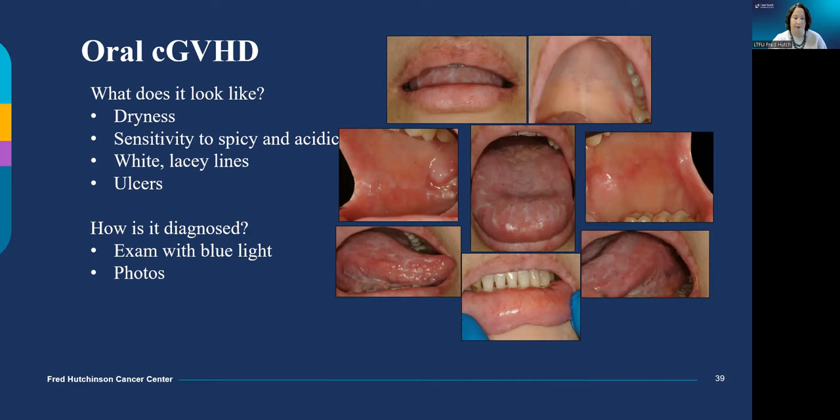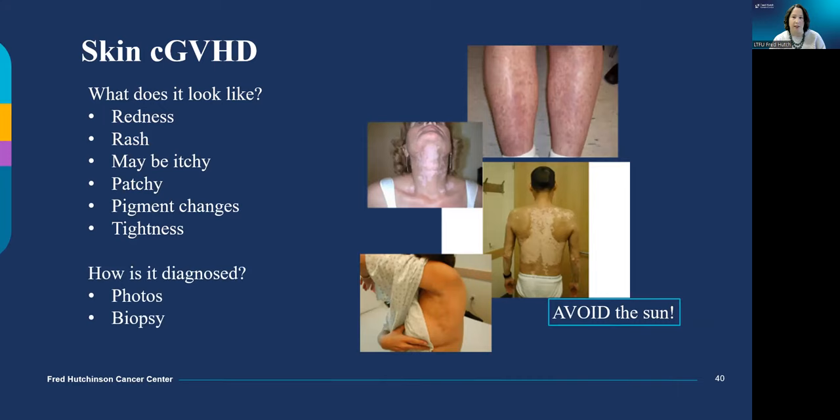Chronic skin GVHD can look like acute skin GVHD with a red itchy rash, but it can also present as lighter or darker pigmentation, shiny spots, or skin tightening. The young man on the right had a sunburn that triggered a graft-versus-host disease flare and now has residual darker pigmentation. We really appreciate photos of skin changes; you can email these to long-term follow-up or send them through MyChart.